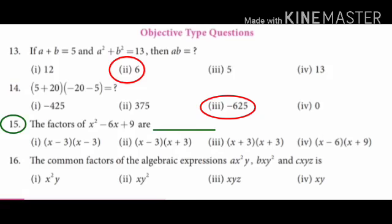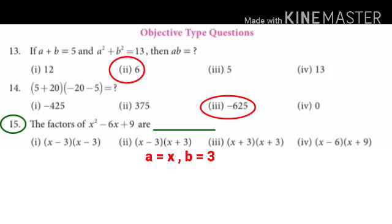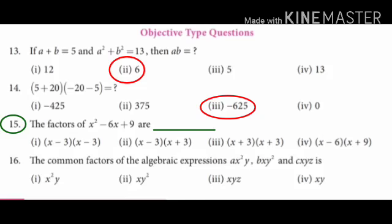15th sum: The factors of x squared minus 6x plus 9 are? As we learnt in the 12th sum, this is the a minus b whole squared formula. So a equals x and b equals 3. Writing it as x minus 3 whole squared gives x minus 3 into x minus 3. The answer is option 1: x minus 3 into x minus 3.